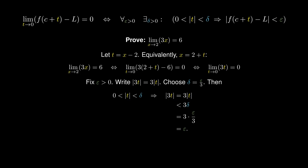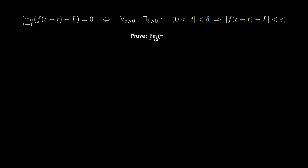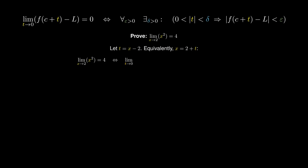This approach extends beyond linear expressions and can be used to prove that the limit of x squared as x approaches 2 is 4. Just like before, we will let t equal the gap x minus 2. This means that x equals 2 plus t, and we can reformulate the original limit problem. Since t equals x minus 2, as x approaches 2, t must approach 0. Since x equals 2 plus t, we can replace every instance of x with 2 plus t and subtract the ultimate limit, with the right side equal to 0. This is equivalent to showing that the limit of 4t plus t squared as t approaches 0 equals 0.